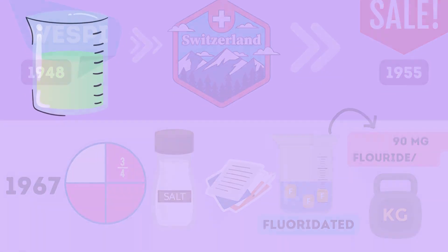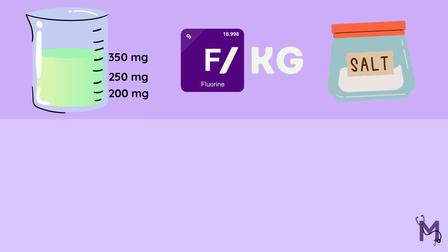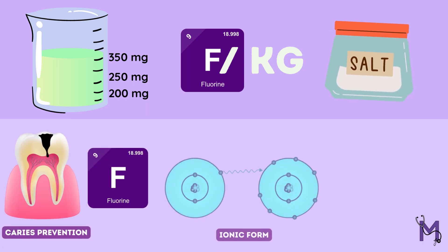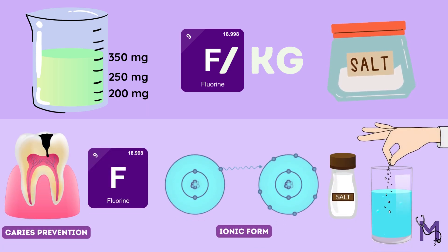Recently conducted investigations have shown that the levels of fluoride can be kept at 200, 250 and 350 mg of fluoride per kg salt. It has also been brought to light that for effective caries prevention, fluoride must be present in ionic form when the salt is dissolved in water.